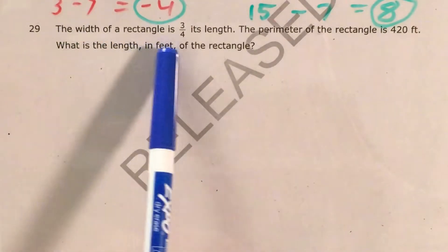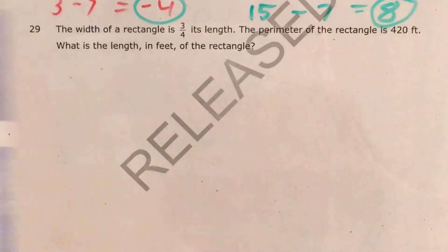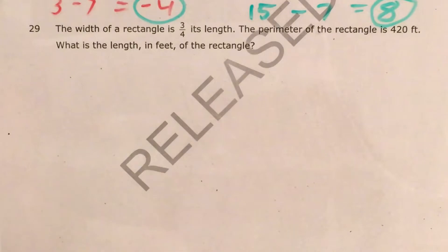The question tells us that the width of a rectangle is three-fourths of its length, and the perimeter of the rectangle is 420 feet. So we're trying to figure out what the length is in feet of the rectangle.